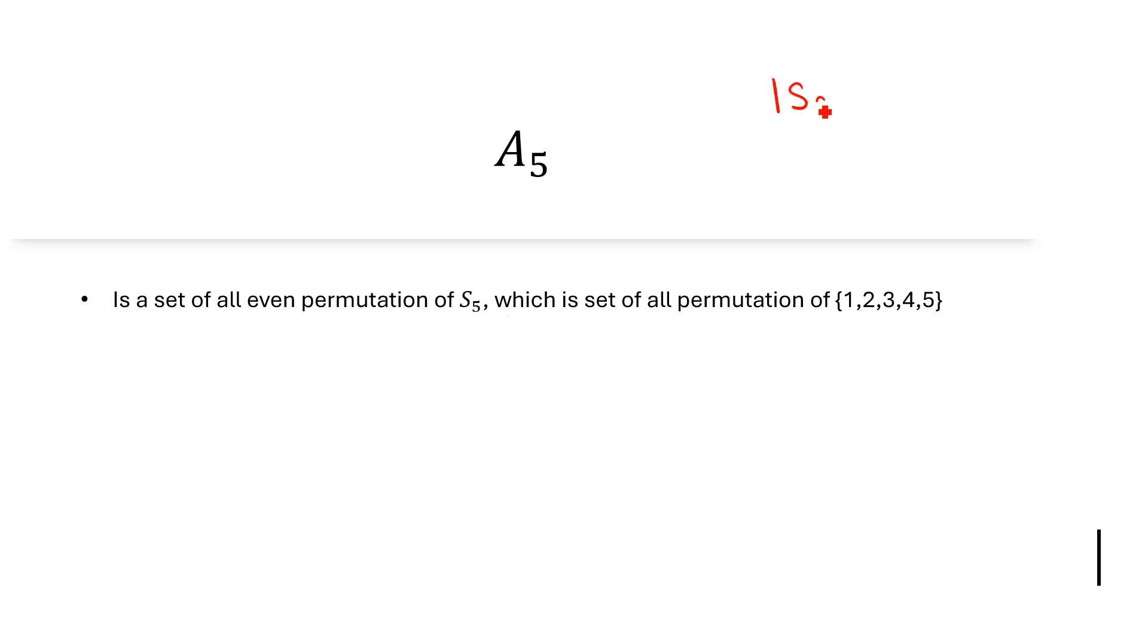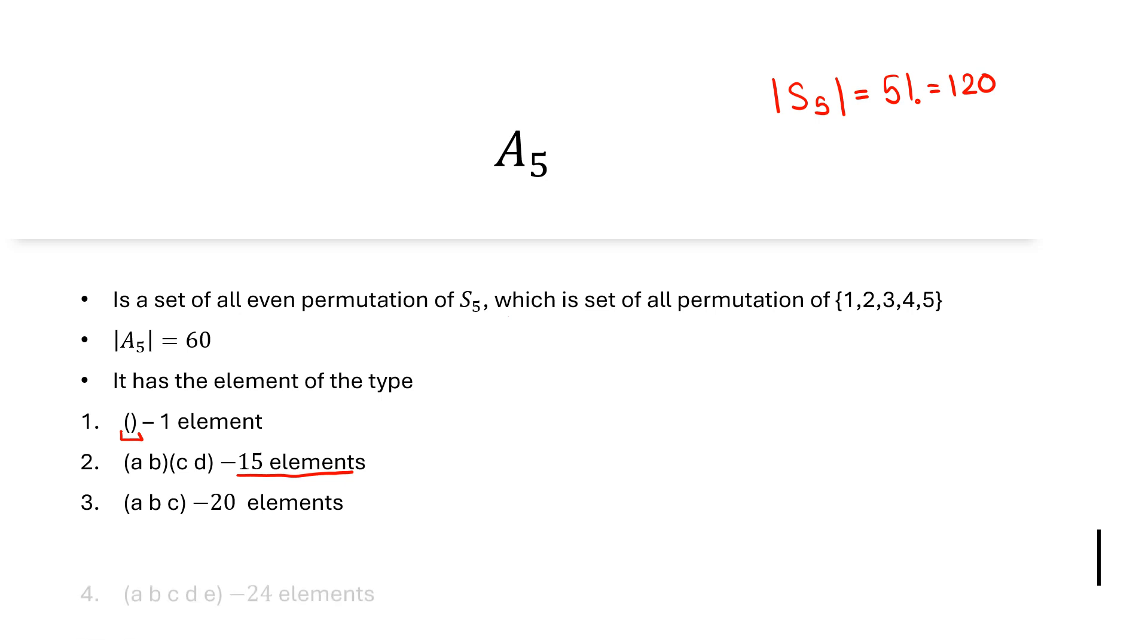The cardinality of S5 is 5 factorial, which is 120, and hence the cardinality of A5 is 60. We should know how the elements look like. The first element is the identity element. The second type is two 2-cycles, AB and CD, which is an even permutation. There are 15 such even permutations inside A5. There are also 3-cycles, which can be written as product of 2 transpositions, hence they are even permutations. There are 20 such 3-cycles inside A5. And there are 5-cycles, which can be written as the product of 4 transpositions, and there are 24 elements of 5-cycles inside A5.